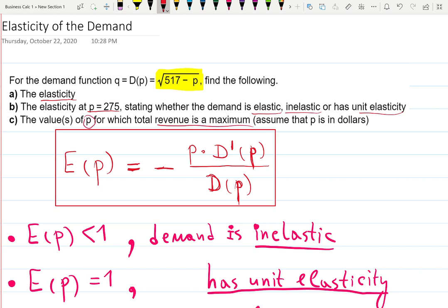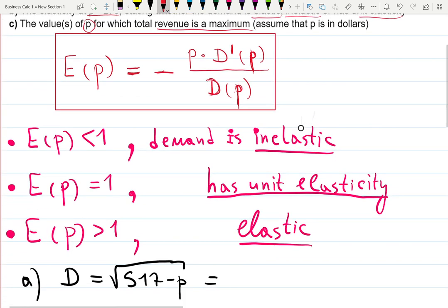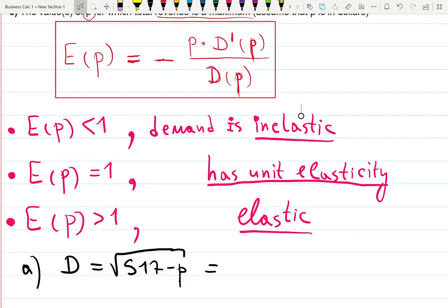Let's first review what we know about elasticity of the demand function. The formula is E(p) equals negative sign in front of the fraction. Remember to find the derivative of the demand function first and divide by the original, but don't forget to multiply by the price.